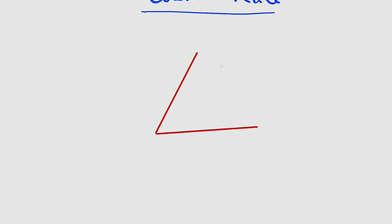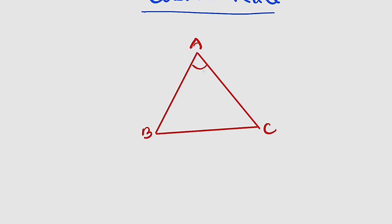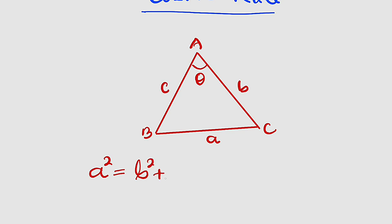To use the cosine rule formula, an angle — either missing or present — together with its opposite side length must be included in that formula. The formula states that if you are looking for side length a, then a squared is equal to b squared plus c squared minus 2 multiplied by b multiplied by c multiplied by cosine of the angle opposite to the side you are looking for.